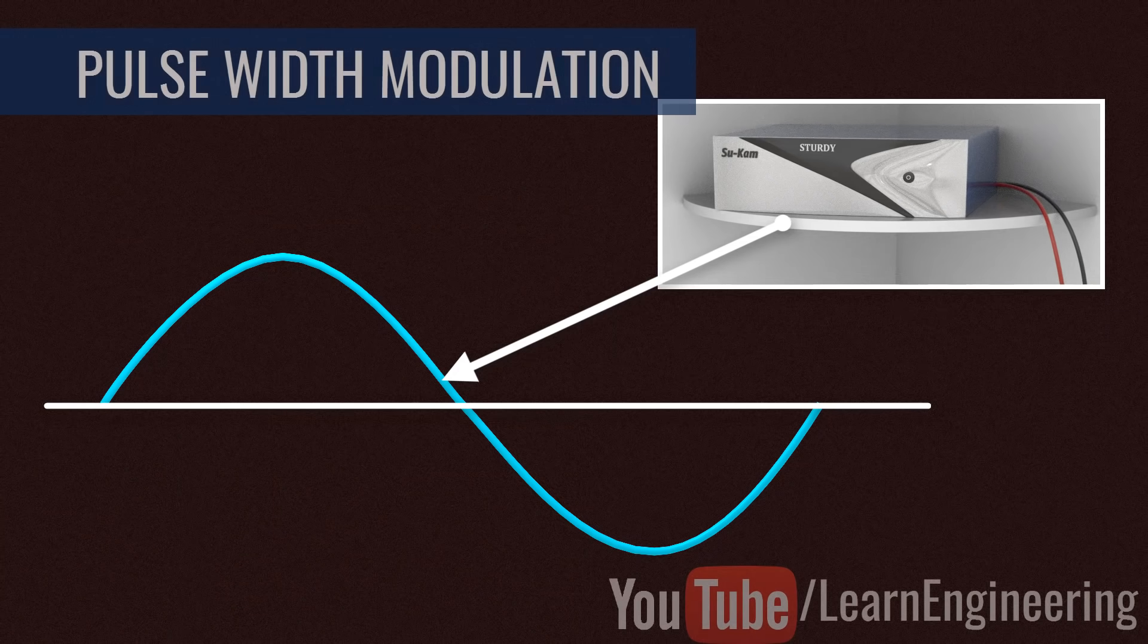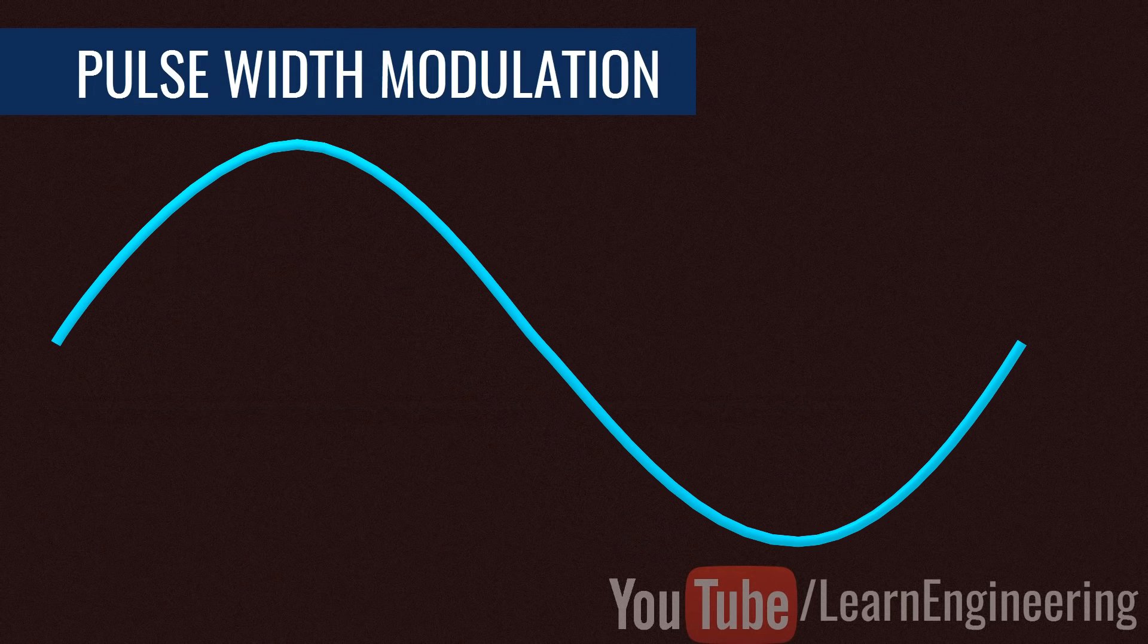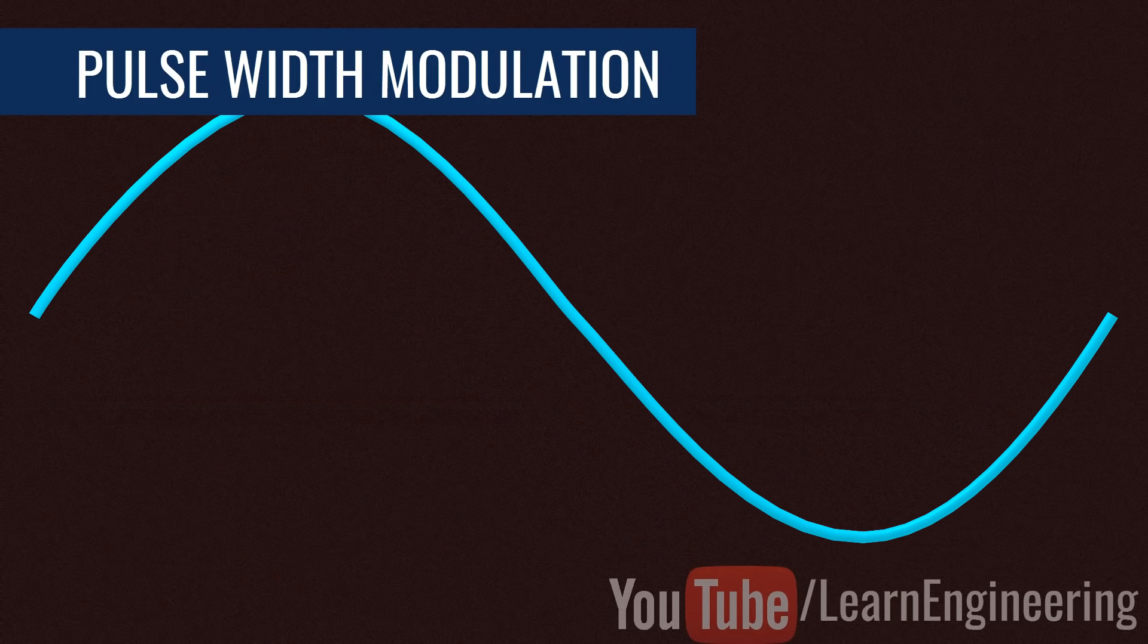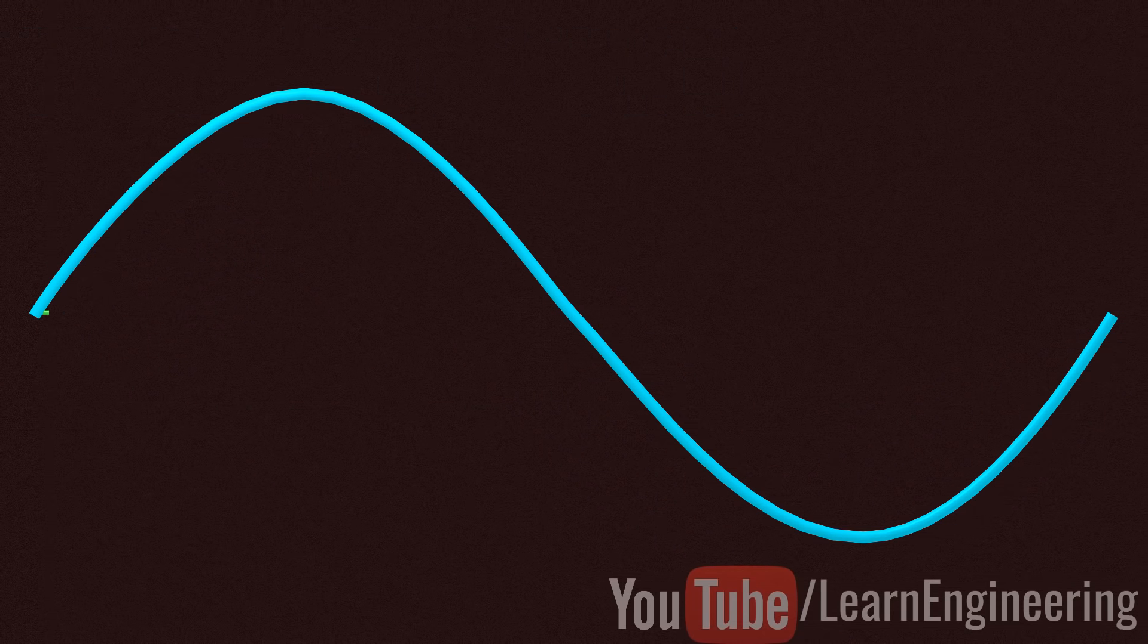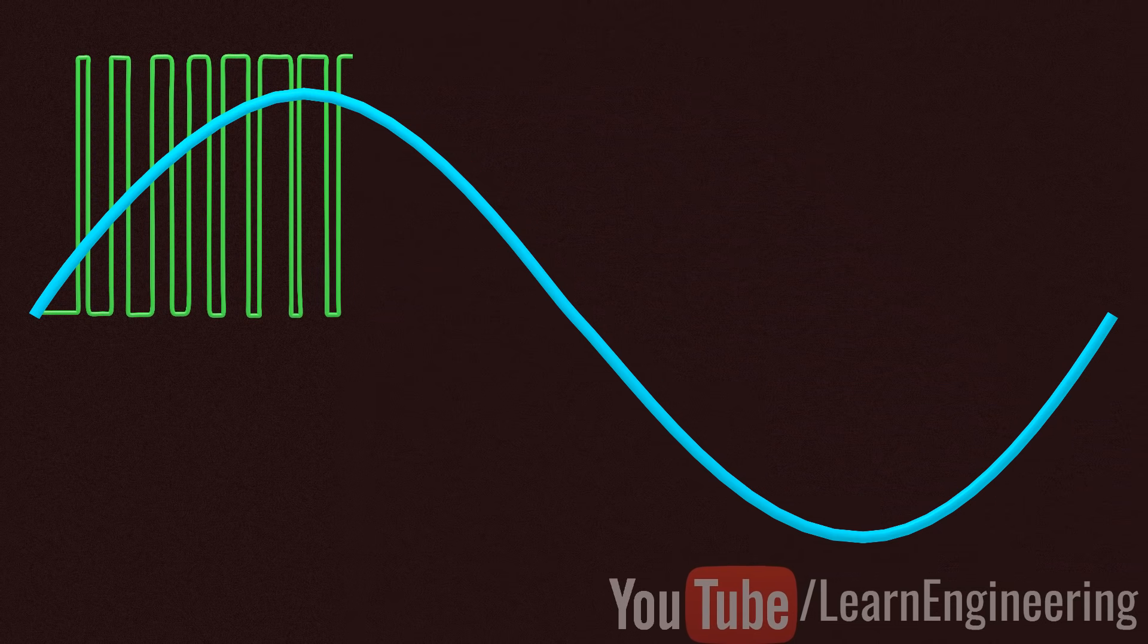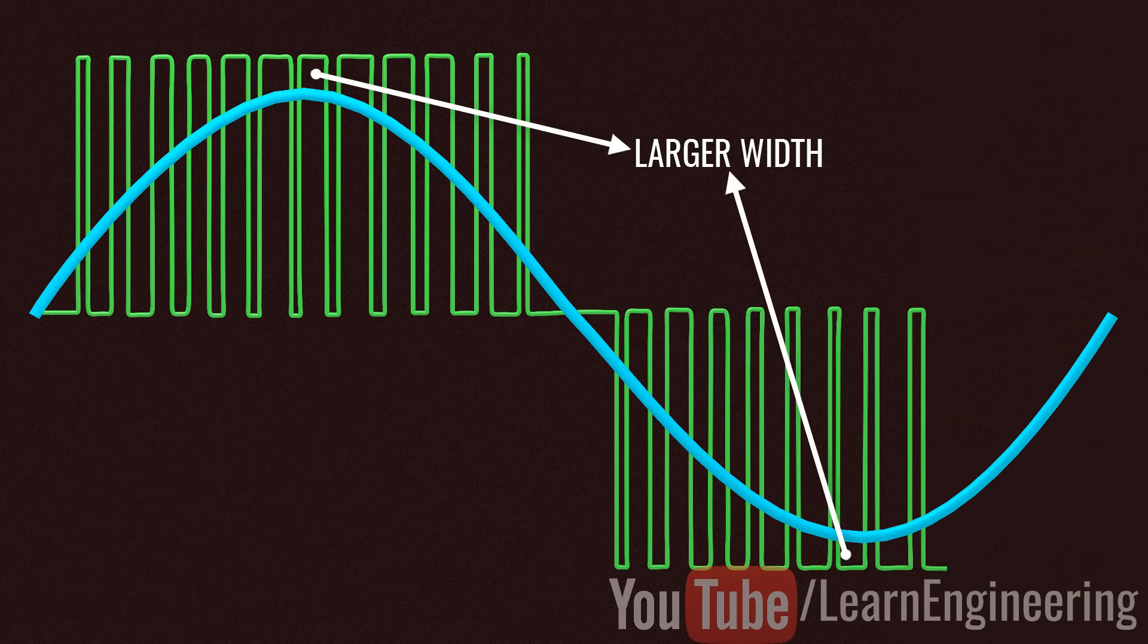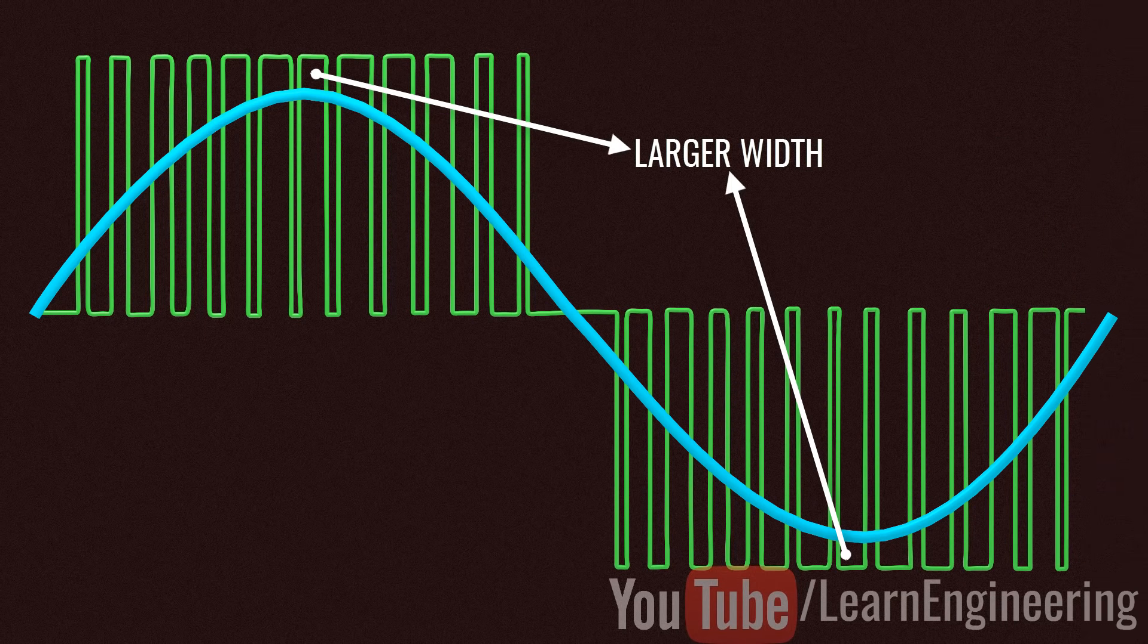A technique called pulse width modulation is used for this purpose. The logic of pulse width modulation is simple. Generate the DC voltage in the form of pulses of different widths. In regions where you need higher amplitudes, it will generate pulses of larger width.